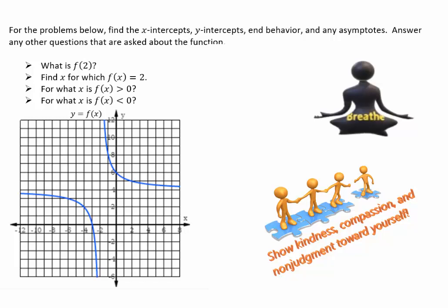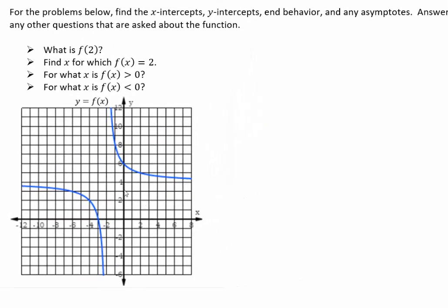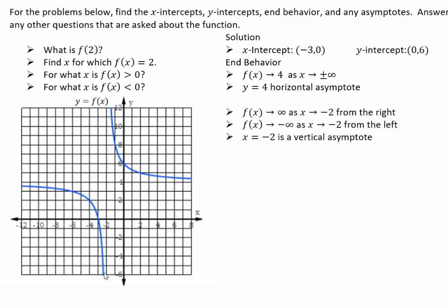X-intercepts are places where the graph hits the x-axis — you can see that's at negative 3. Y-intercepts are places where your graph hits the y-axis, in this case at 6, so the point is (0, 6). When x is going to positive infinity, the graph gets closer to 4. When x goes to negative infinity, the graph also gets closer to 4, so y equals 4 is the horizontal asymptote. When x gets closer and closer to negative 2, y shoots to negative infinity, and from the right it shoots to positive infinity.